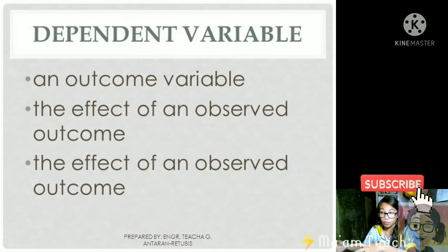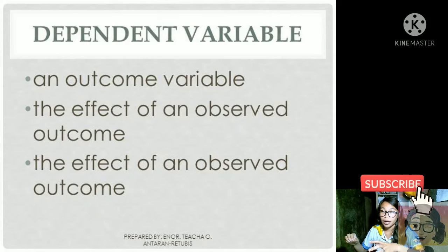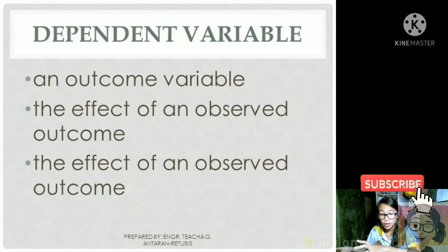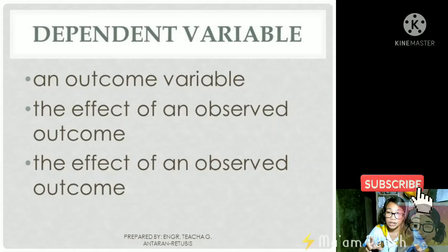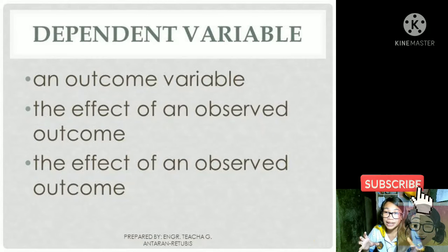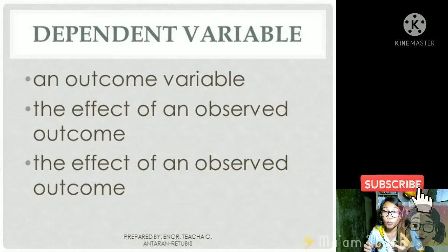Like for example, may binago ka sa independent variable mo—halimbawa, binago mo yung color or the texture. So ano yung naging effect? Yung dependent variable mo yun yung magiging naobservan mo na nagbabago.